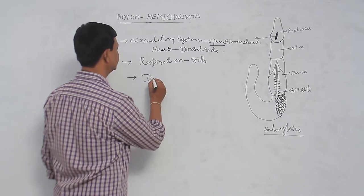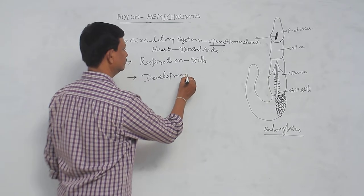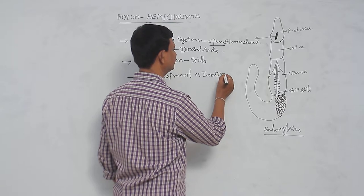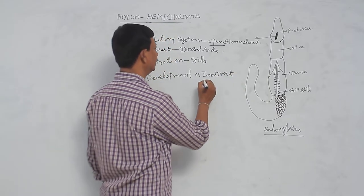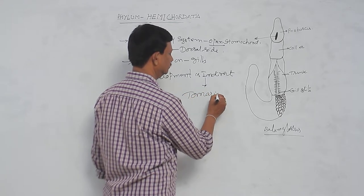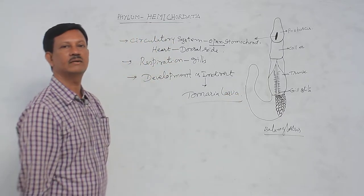Development is indirect, the presence of larval form. The larva is known as the tornaria larva. Tornaria larva is present in the life history of the hemichordata.